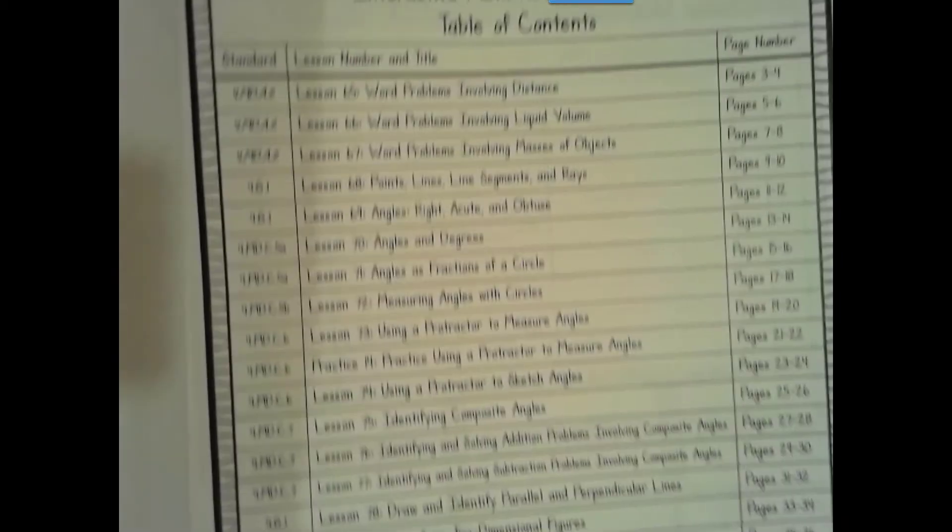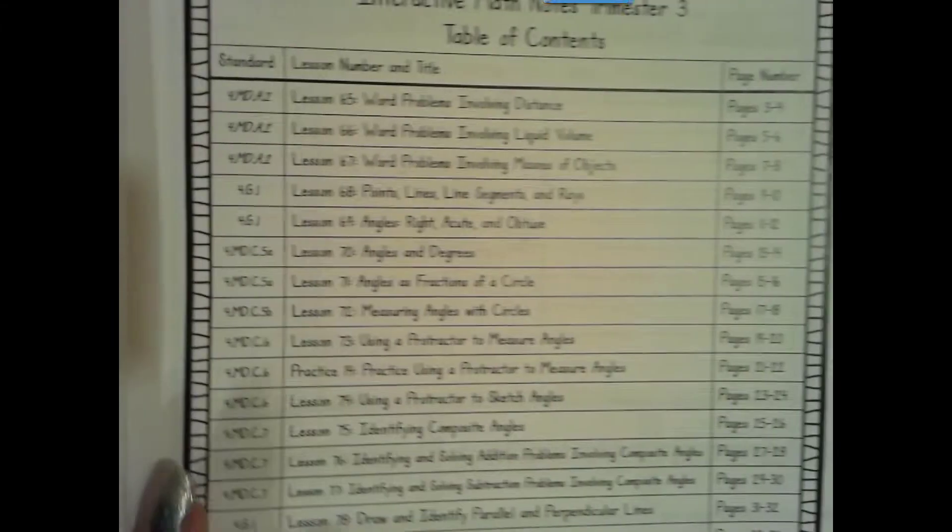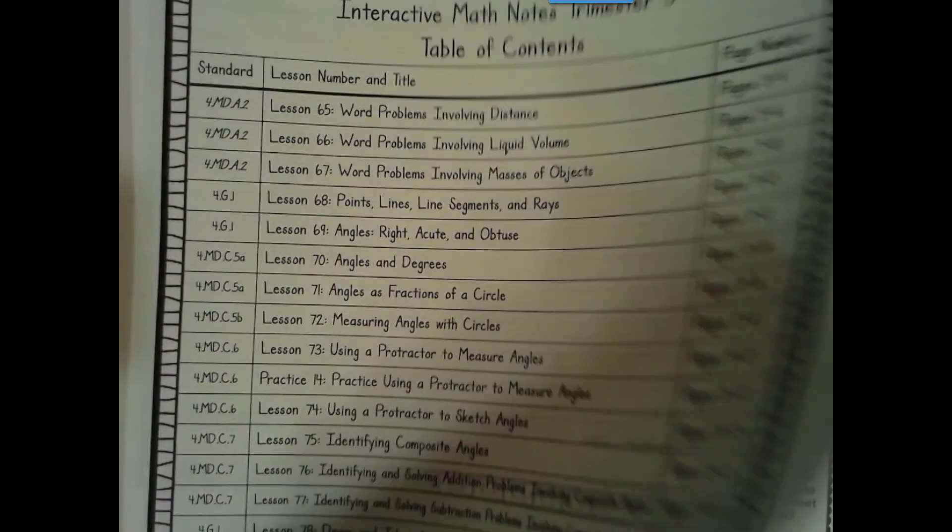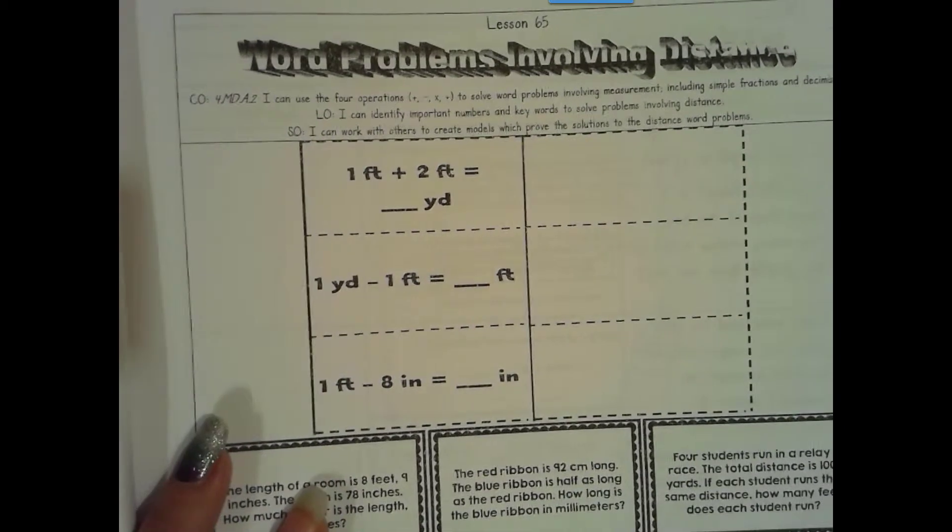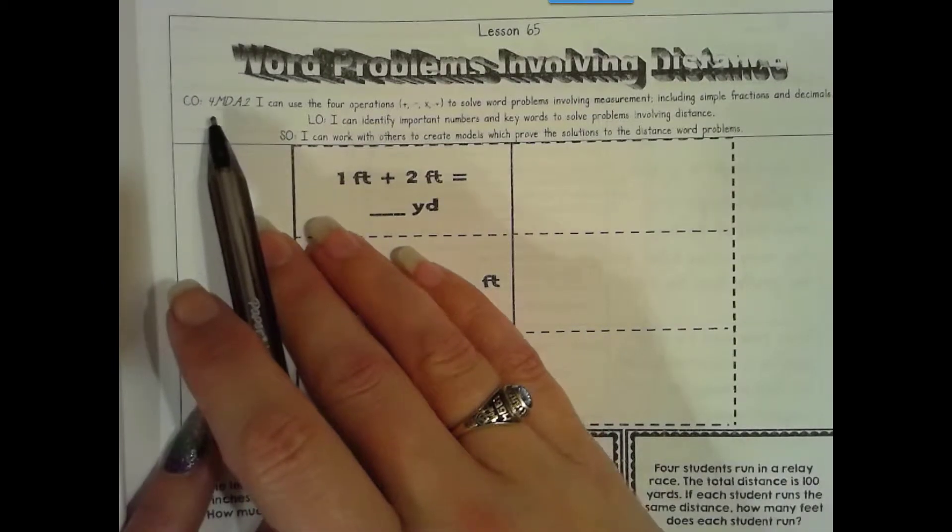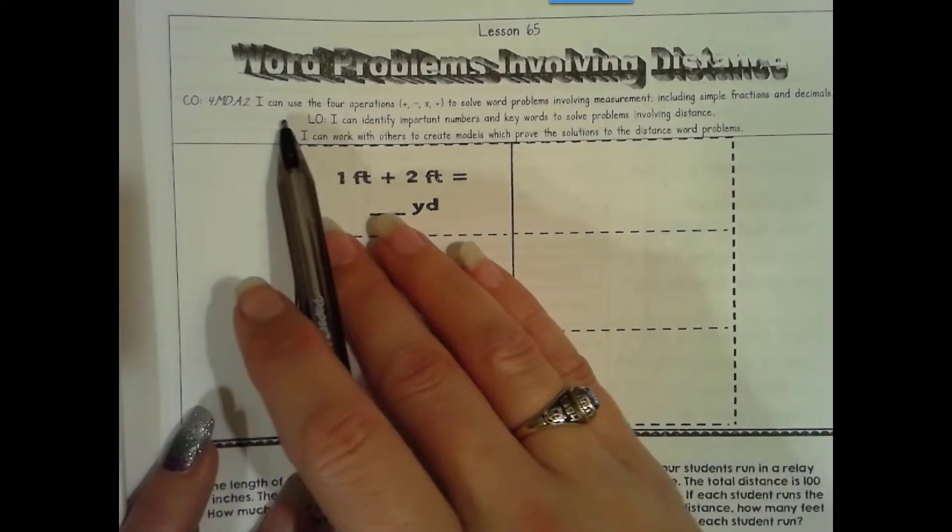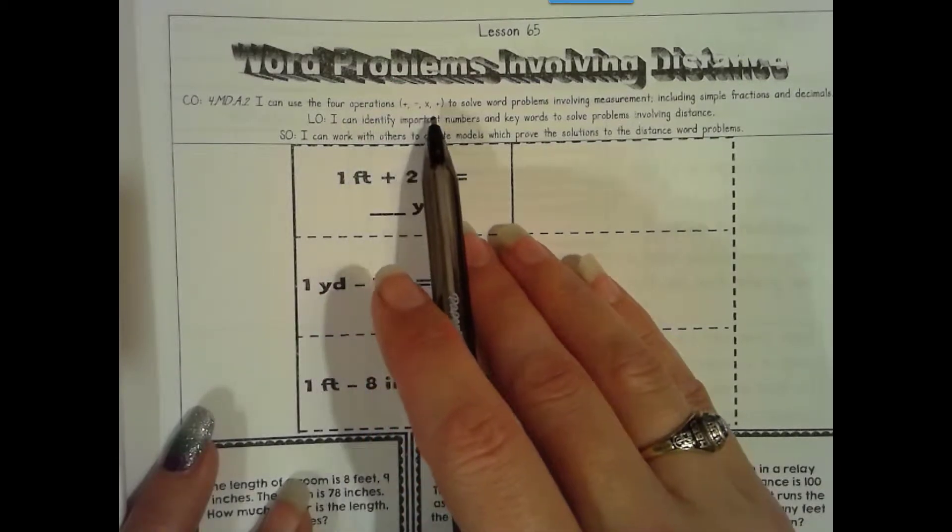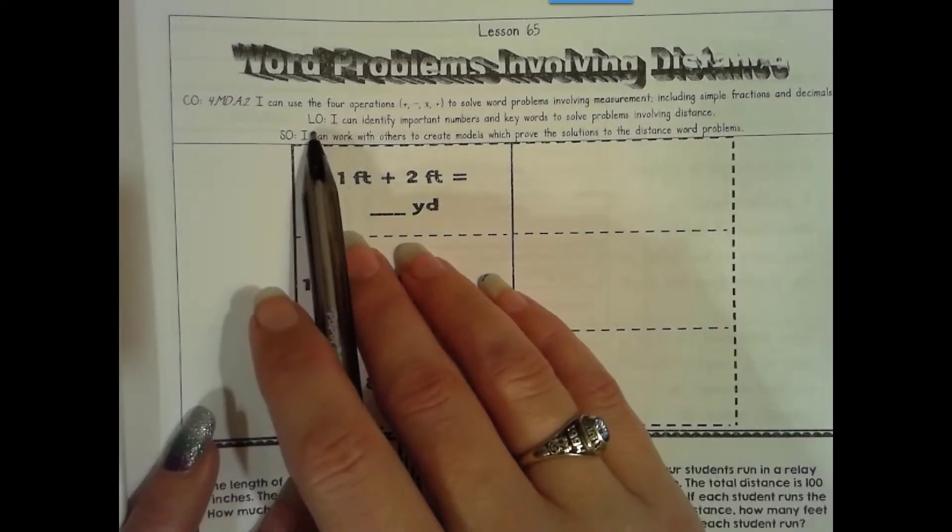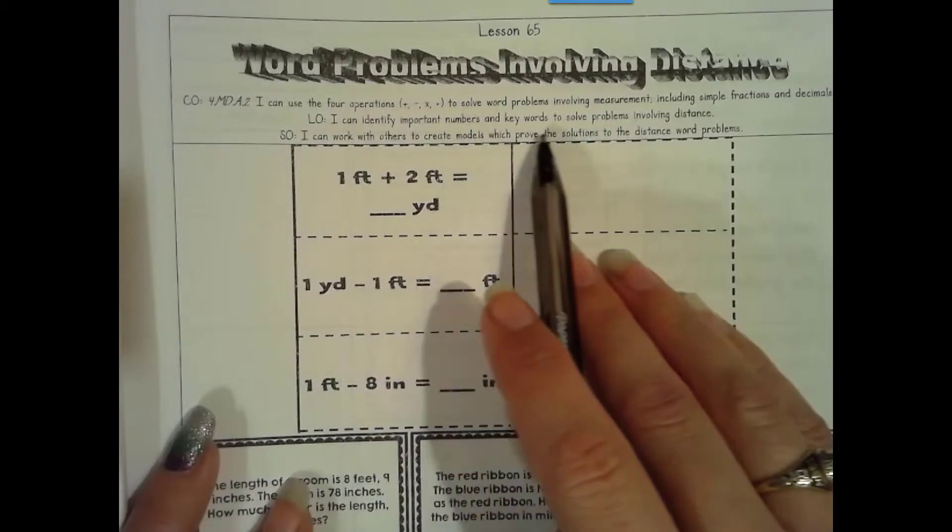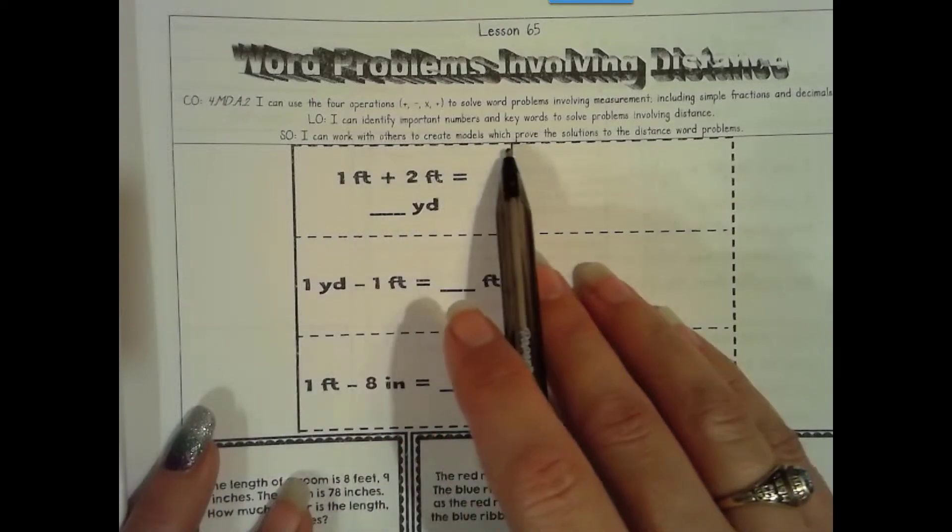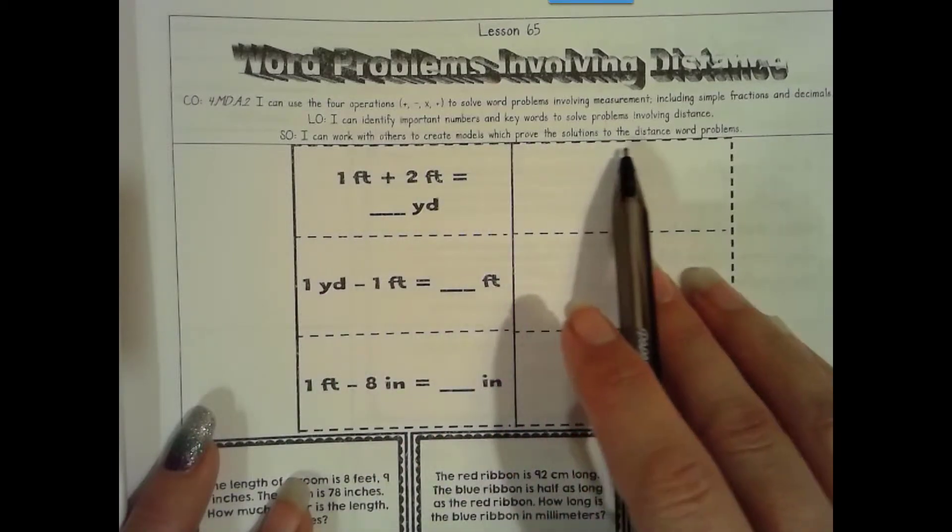Alright, so we're on Lesson 65, first lesson of these notes. Word problems involving distance, returning to pages 3 and 4. So here we have our content objective for 4th grade MD measurement data A2. I can use the four operations - addition, subtraction, multiplication, and division - to solve word problems involving measurement, including simple fractions and decimals. Language objective: I can identify important numbers and keywords to solve problems involving distance. Social objective: I can work with others to create models which prove the solution to the distance word problems.